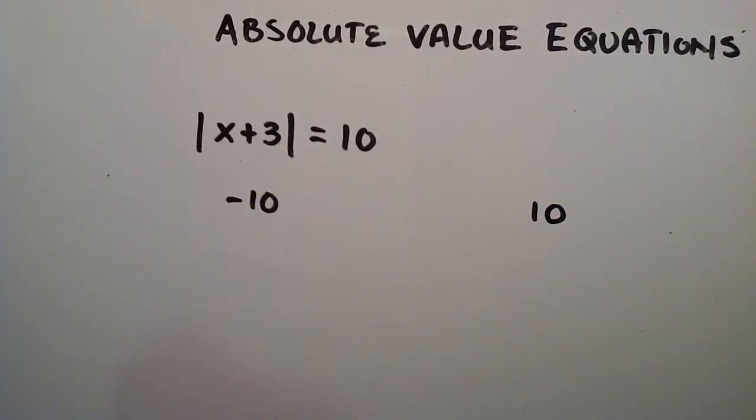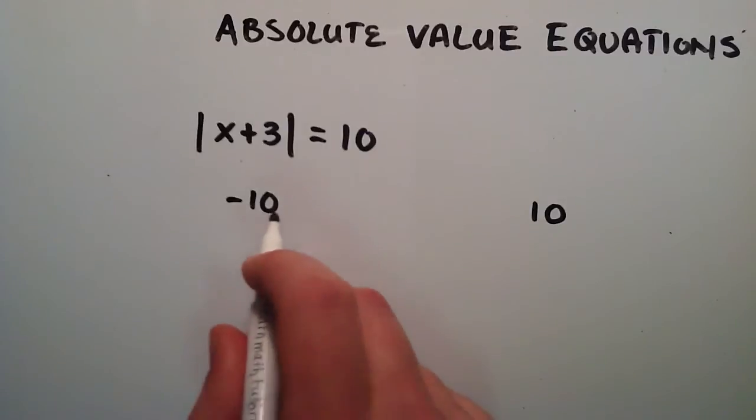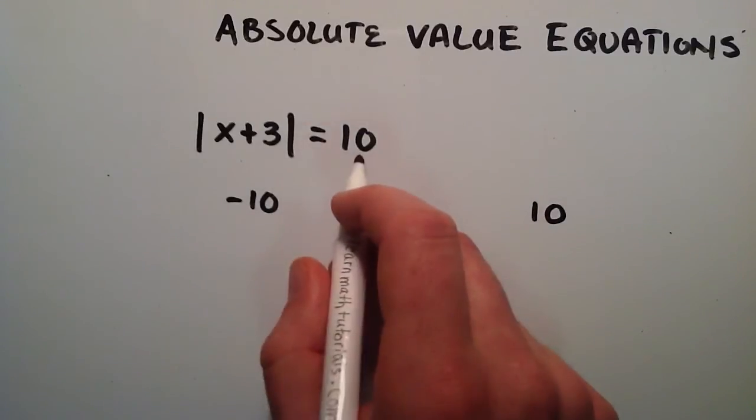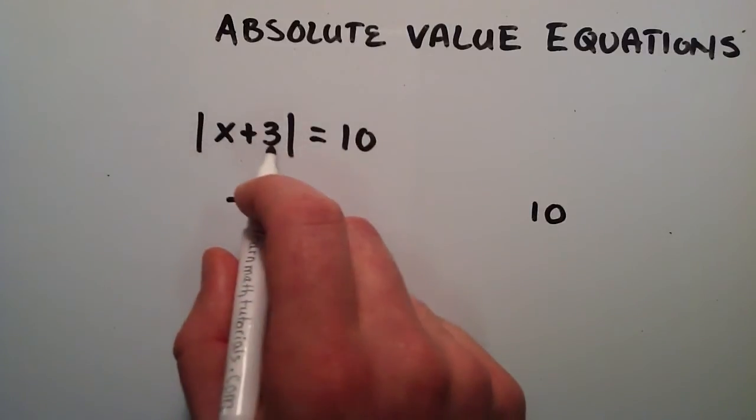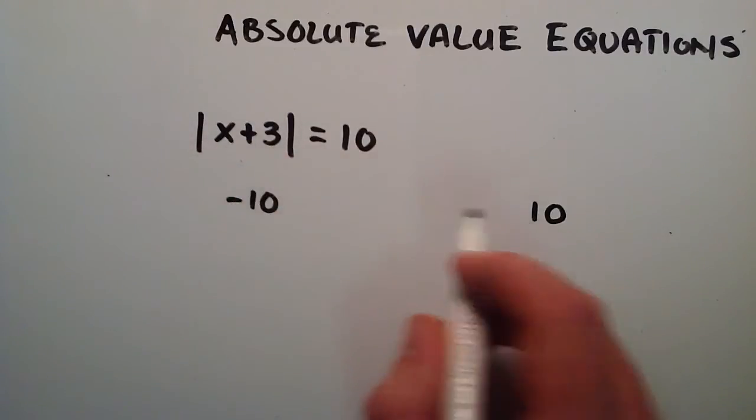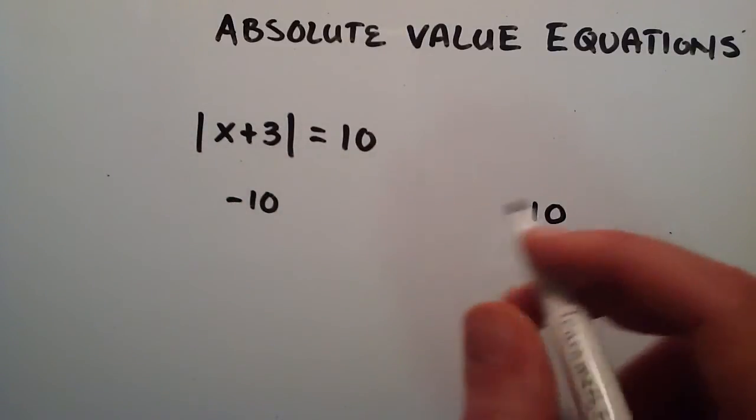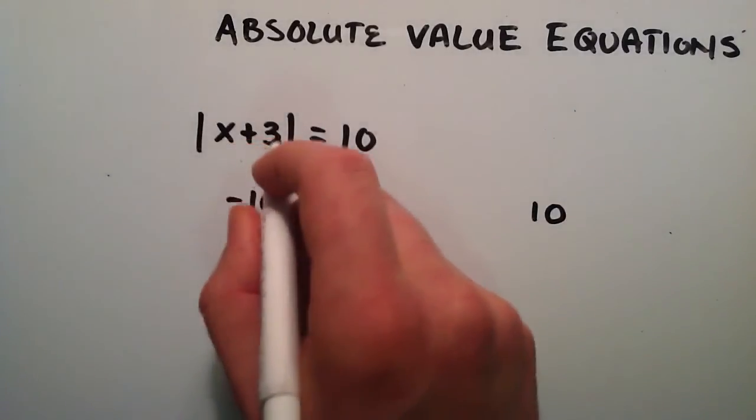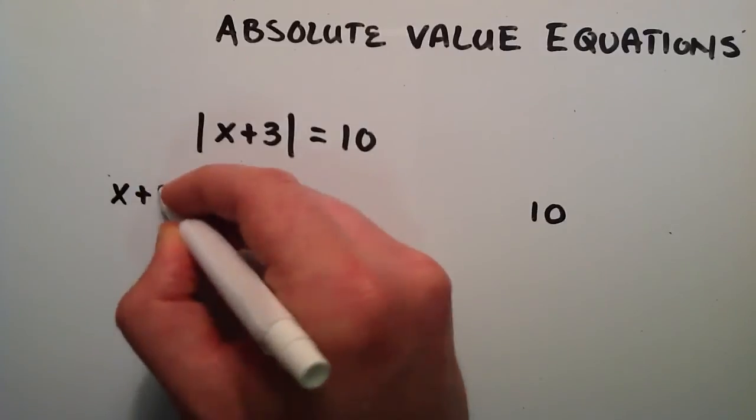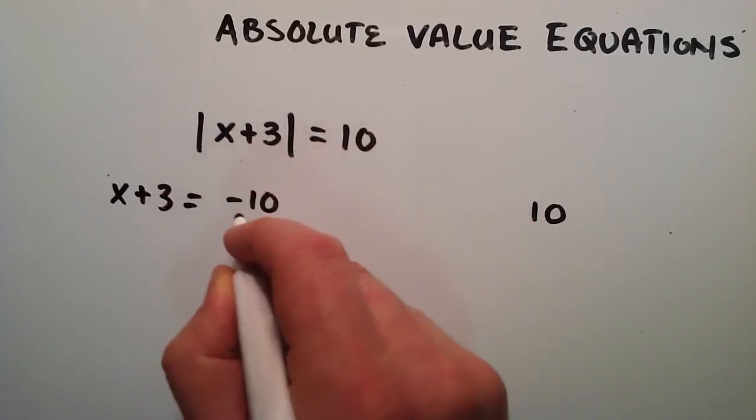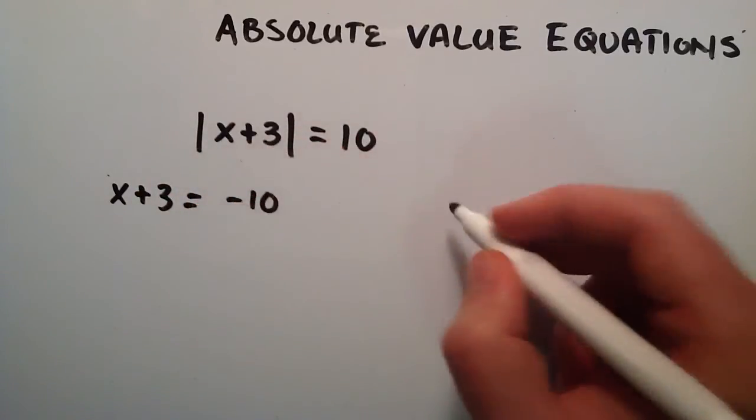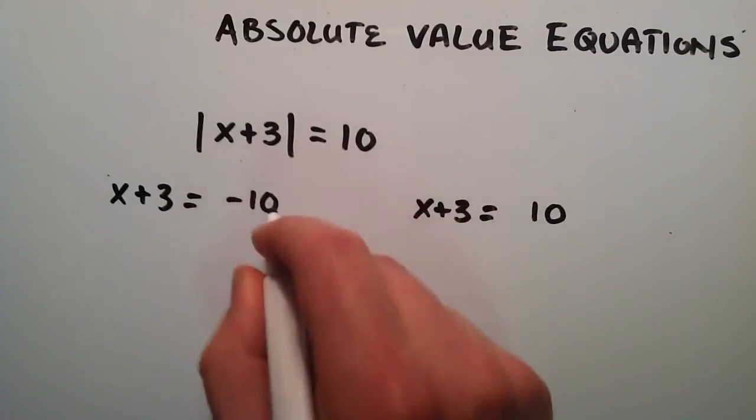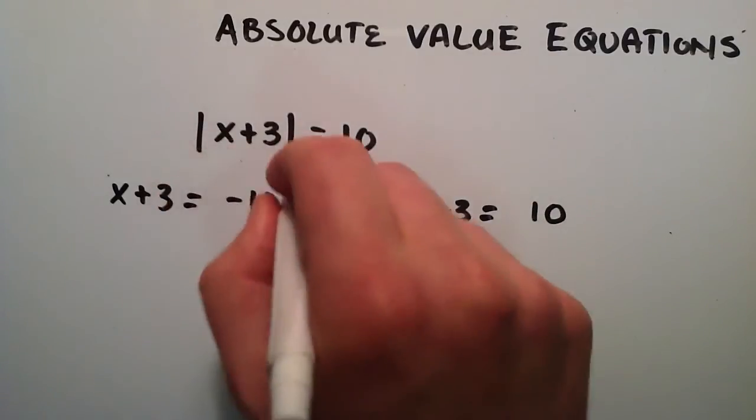What we're saying then, is since we can plug in either one of these into an absolute value and it will equal 10, then that means that x plus three has to be one of these two choices. So because of that, we can simply create an equation. And we do that by saying x plus three equals negative 10 and x plus three equals positive 10, since x plus three has to be one of these two choices for this statement to be true.